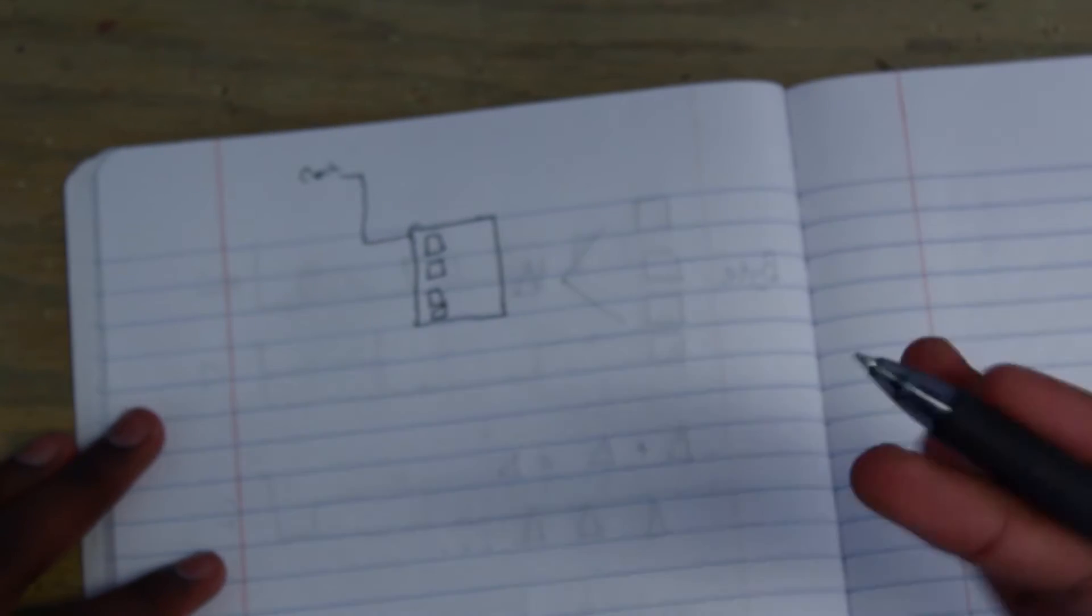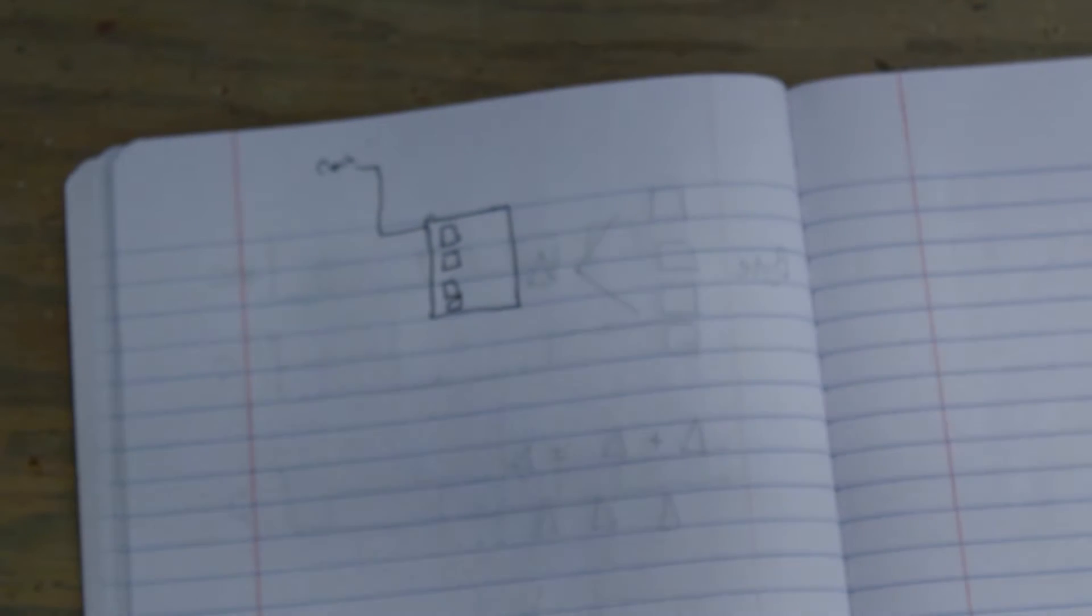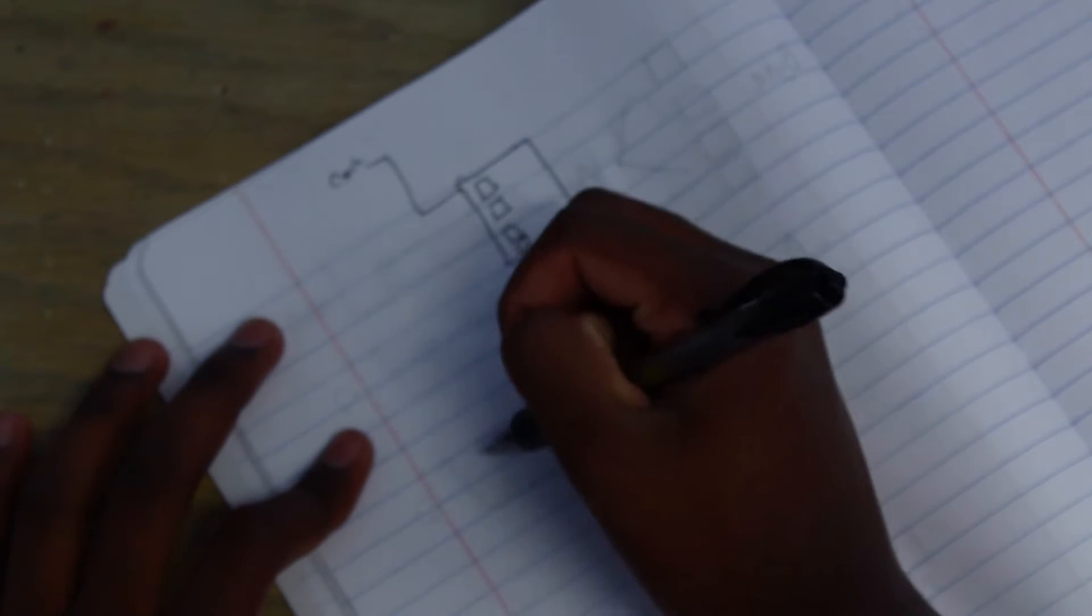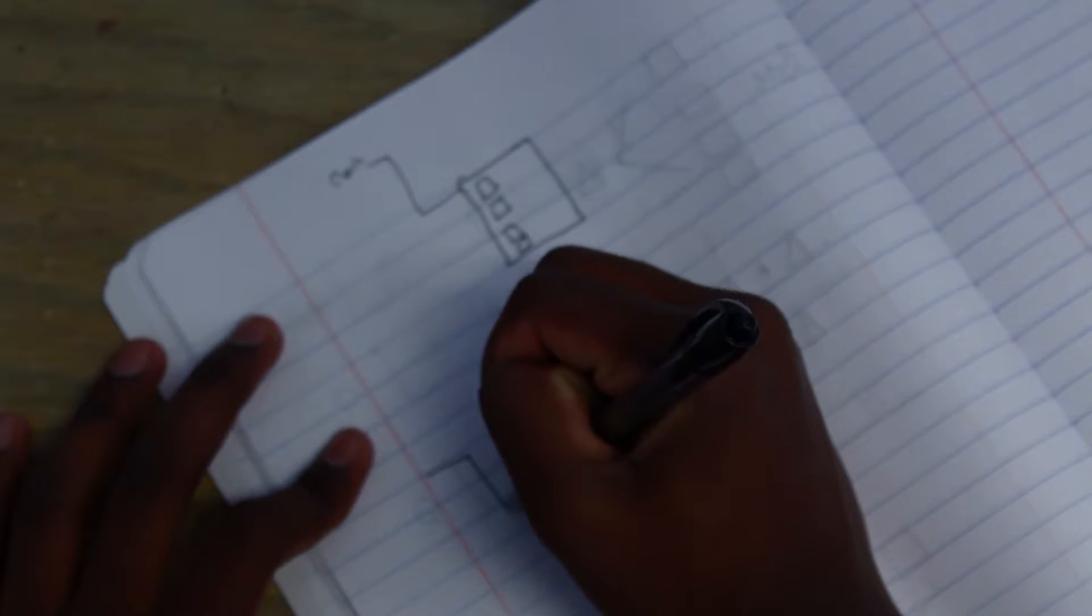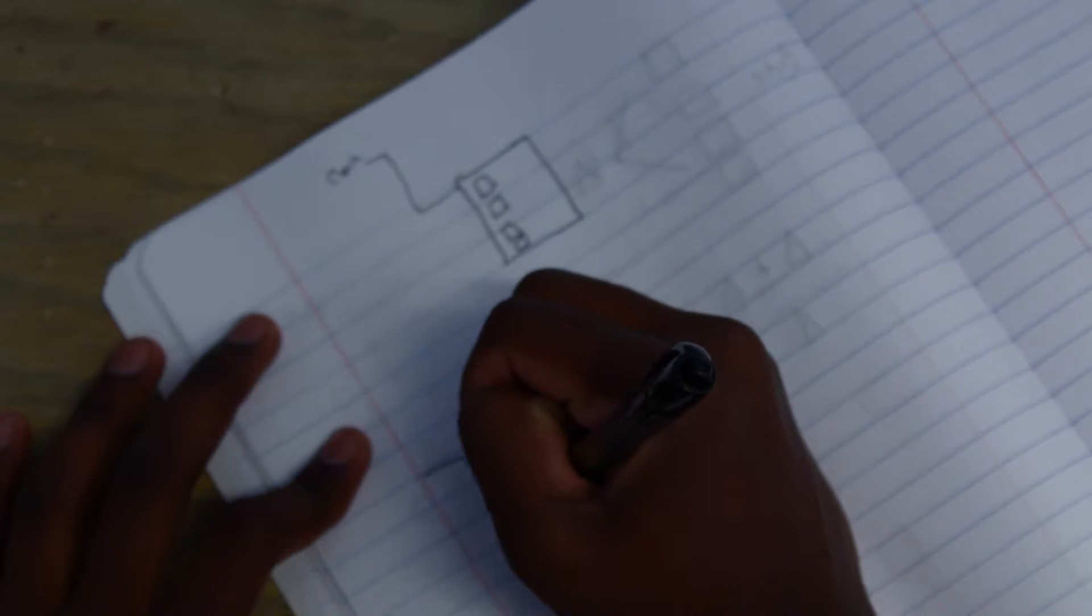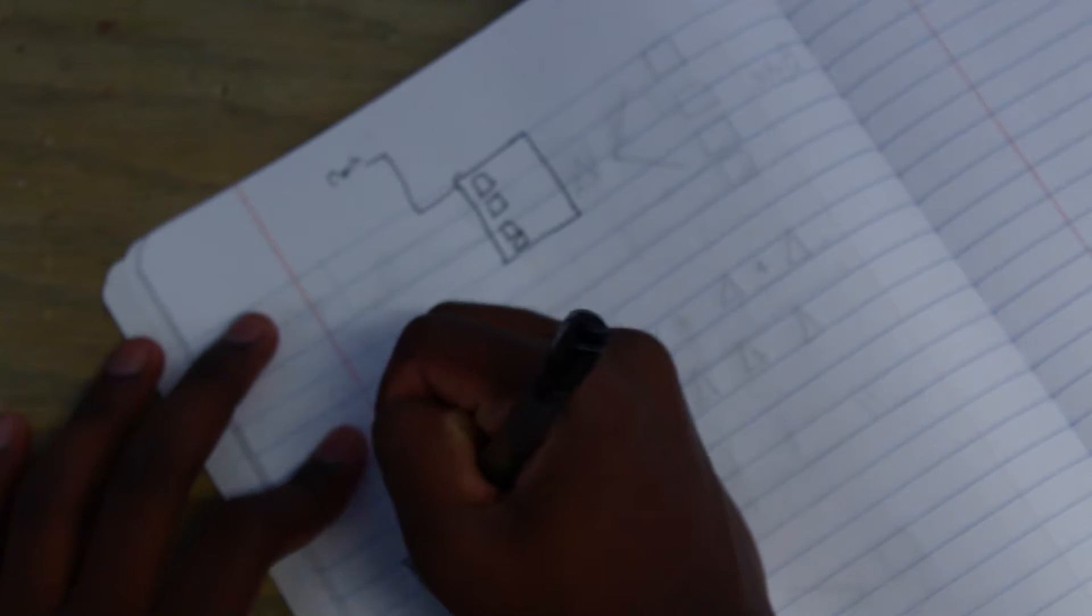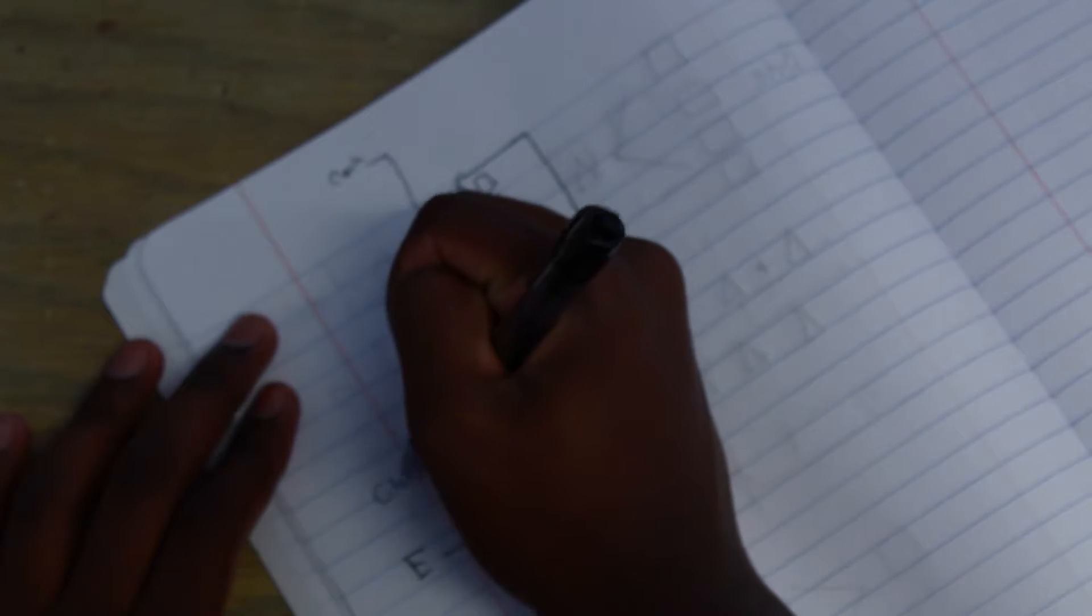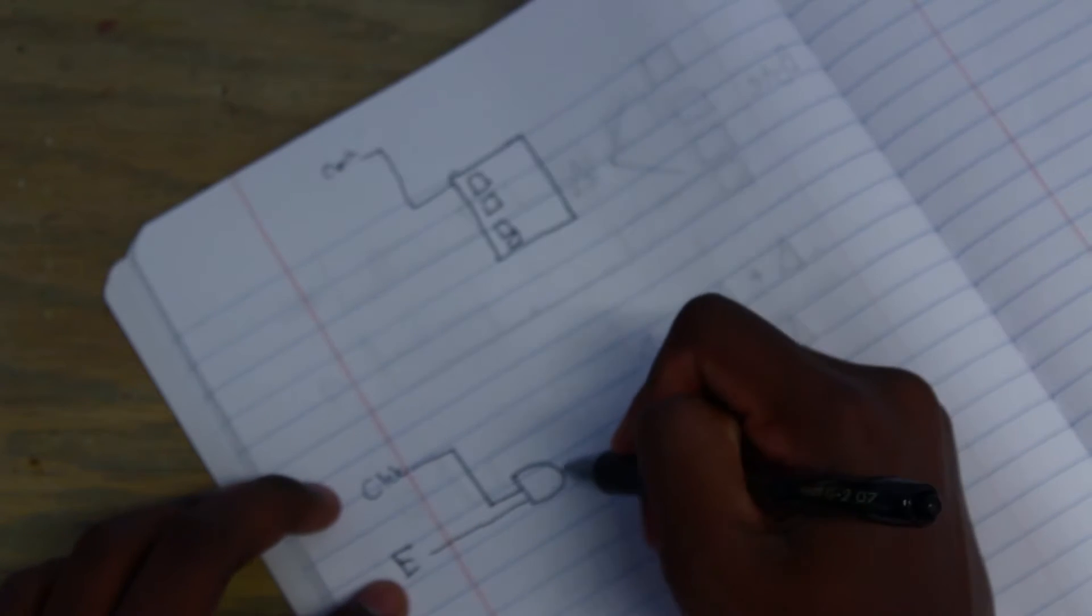So, instead of having the values reset constantly, we want a way to say, I want to write or I don't want to write. And we do this with an AND gate. So, this is the clock cycle. Right? And we have that going into an AND gate. And then we have this be our enable line. Okay? Clock enable line. And then this output has a pull-down resistor.